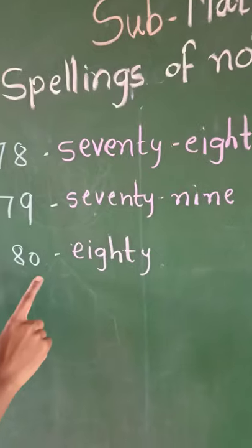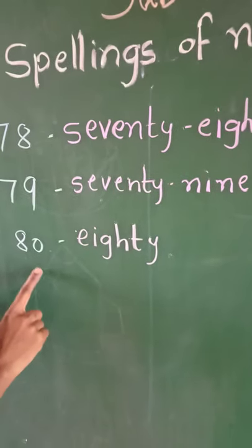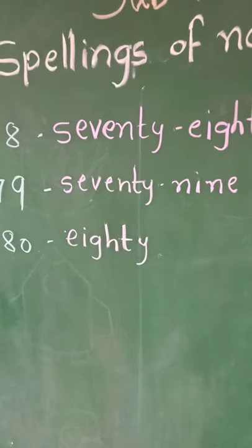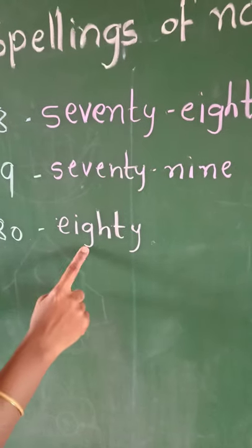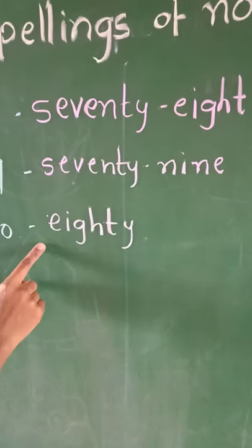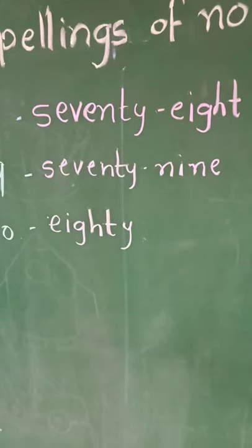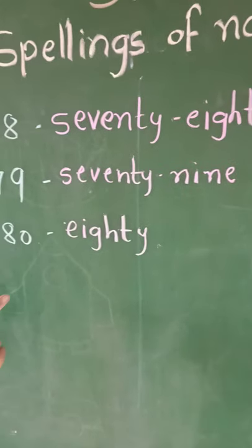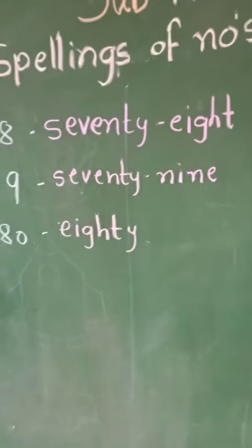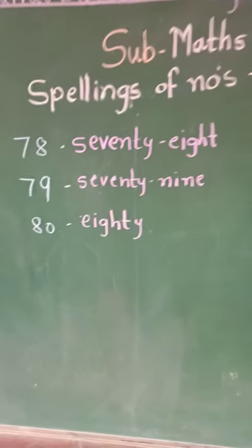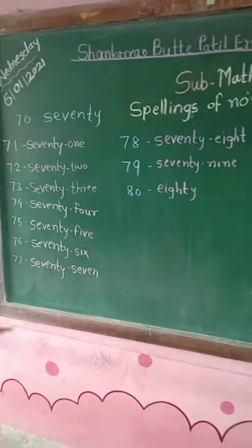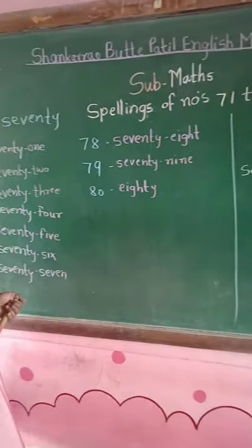Now see here — this is number 80. The spelling of 80 is E-I-G-H-T-Y. So the spelling is different from the others. You have to learn all these spellings, okay? Your today's homework is to write these spellings 2 times in your math notebook.